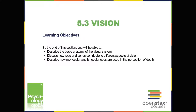5.3 Vision. Learning Objectives. By the end of this section, you'll be able to describe the basic anatomy of the visual system, discuss how rods and cones contribute to different aspects of vision, and describe how monocular and binocular cues are used in the perception of depth.